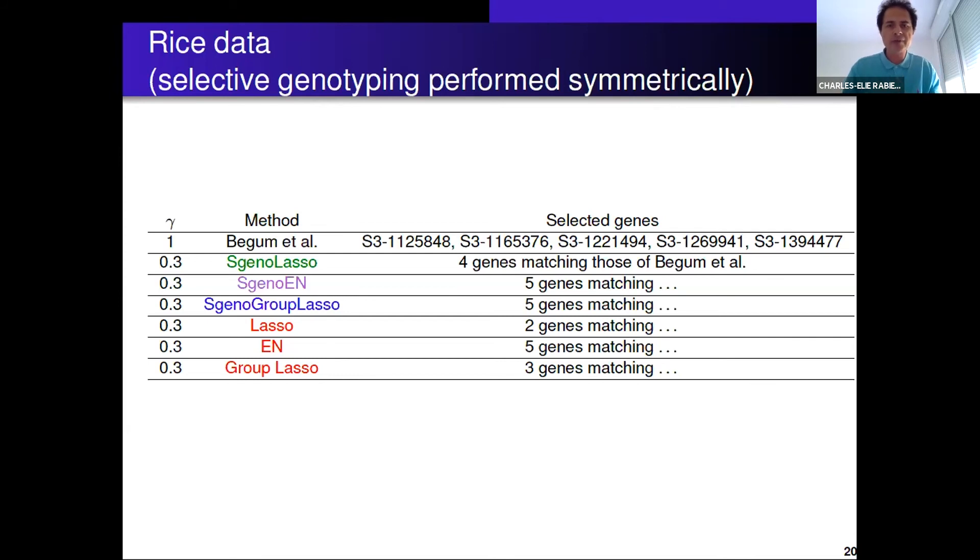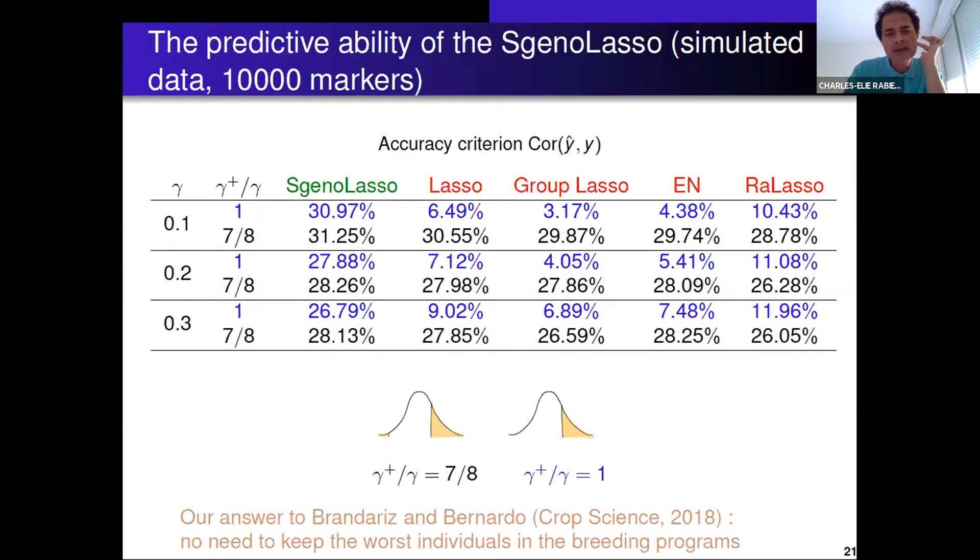The bad news is that none of the methods work when we select only the best individuals - SG no or classical lasso methods. But what we show here is that when you genotype only at the two tails of the population, all the methods worked. For Begum et al., at the top of the table it's reported the five genes that we are supposed to find on chromosome 3 of rice. If you genotype 15 percent at the right tail and 15 percent at the left tail, SG no lasso was able to find the four genes, and elastic net five genes, SG no group lasso five genes, and the classical elastic net also five genes.